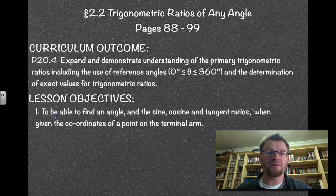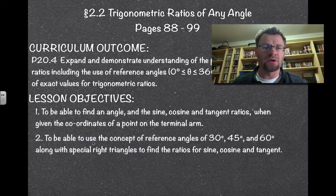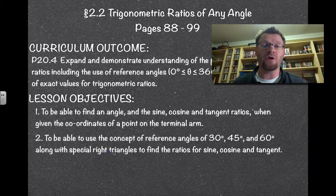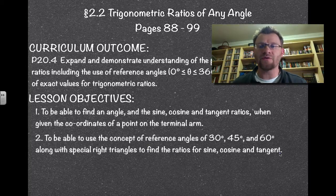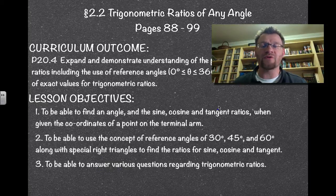Our lesson objectives: one, to be able to find an angle and the sine, cosine, and tangent ratios when given the coordinates of a point on the terminal arm. Two, to be able to use the concept of reference angles of 30, 45, and 60 degrees, along with special right triangles, to find the ratios for sine, cosine, and tangent. And three, to be able to answer various questions regarding trigonometric ratios.